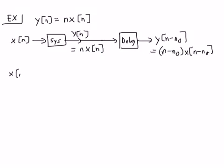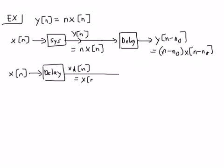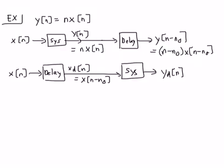Now compare that to the case where we delay the input first. We get xd(n) = x(n - n0), and then run that through the system. The system multiplies the input by n, so yd(n) = n·xd(n). Substituting in for xd(n), we get yd(n) = n·x(n - n0).